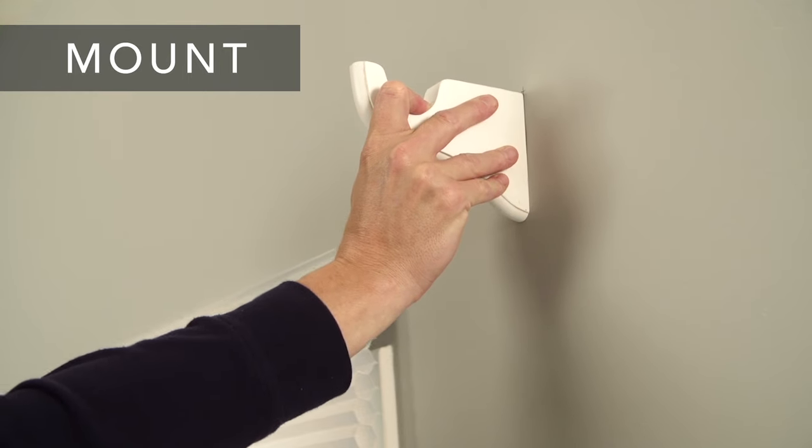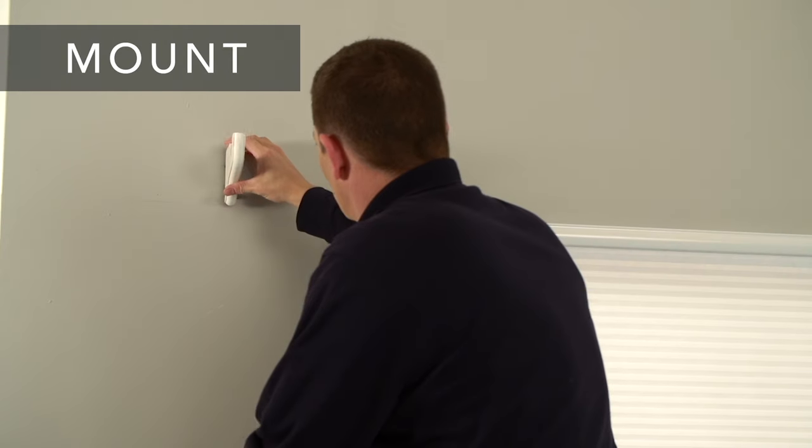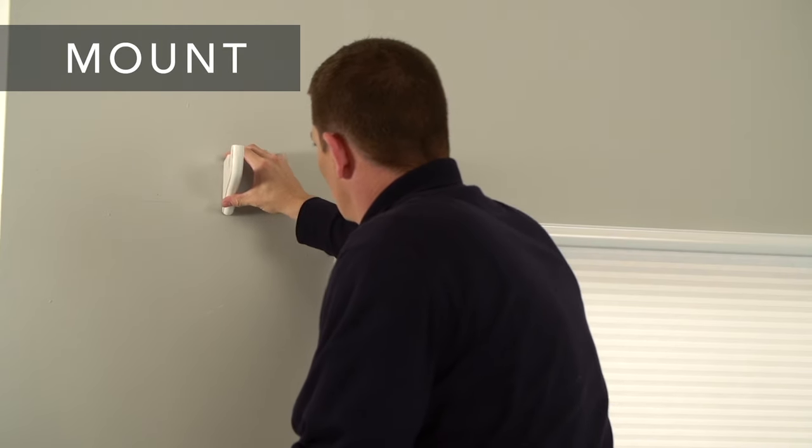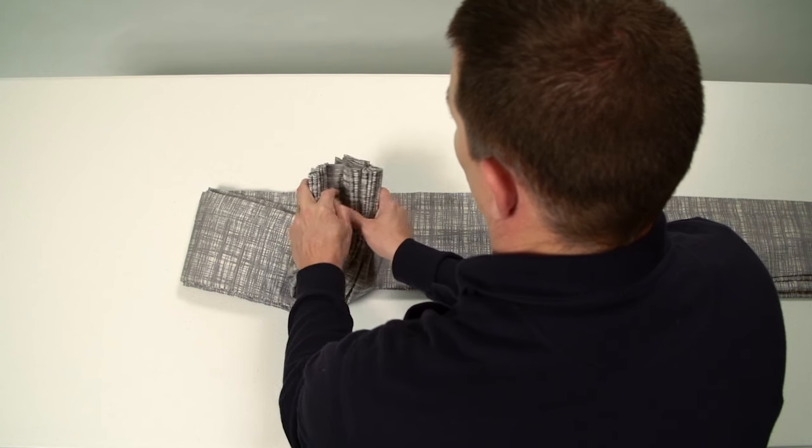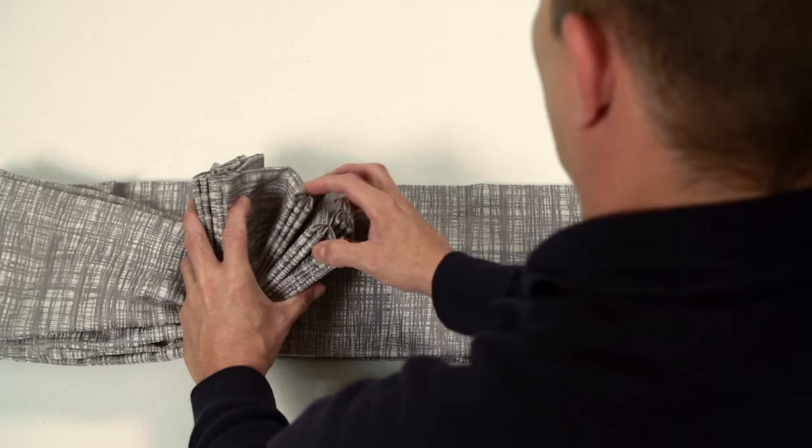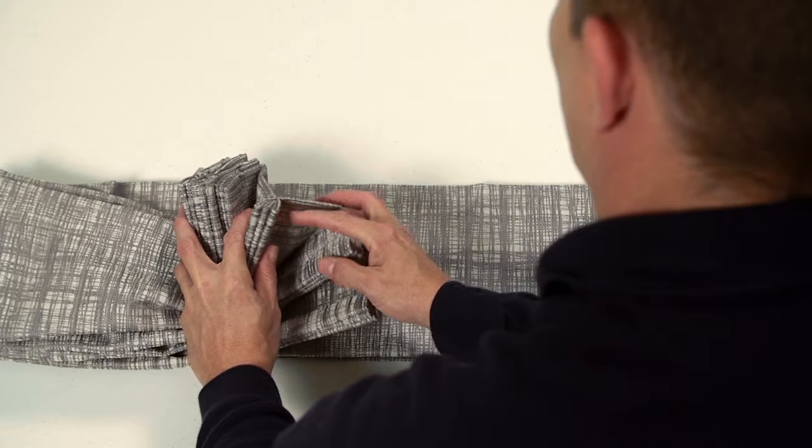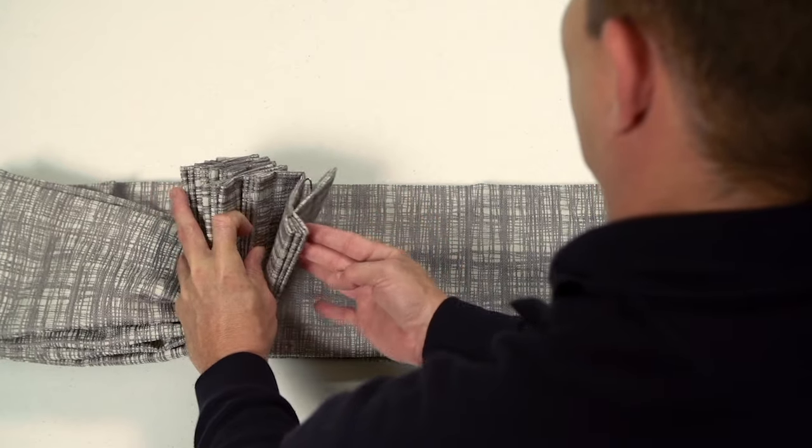Next, mount the decorative rod holders onto the brackets. You will need to count the number of pleats on your drapery to determine if you have the correct number of glides or rings on your rod. If you need to add or remove glides or rings, follow the printed instructions that came with your hardware.